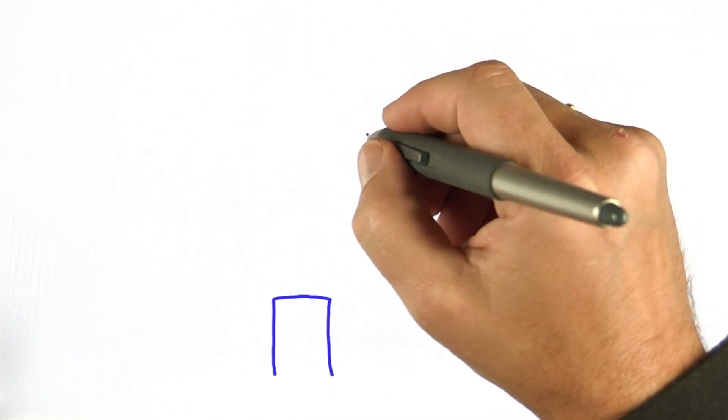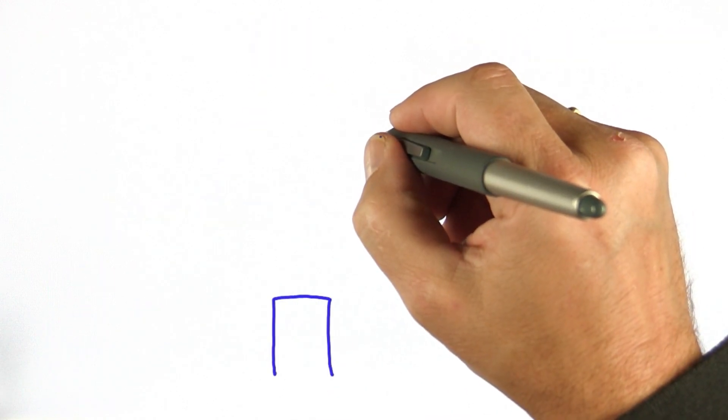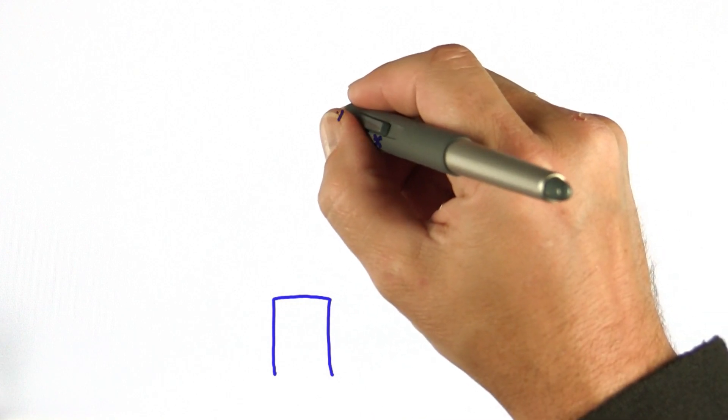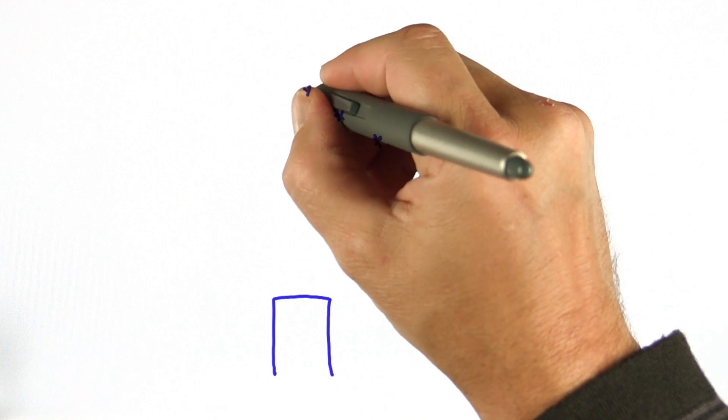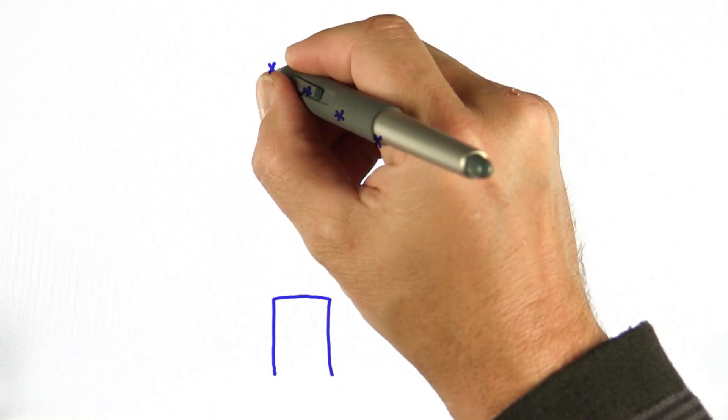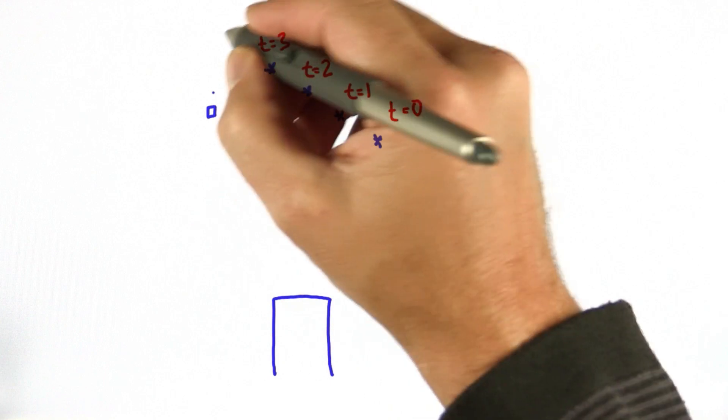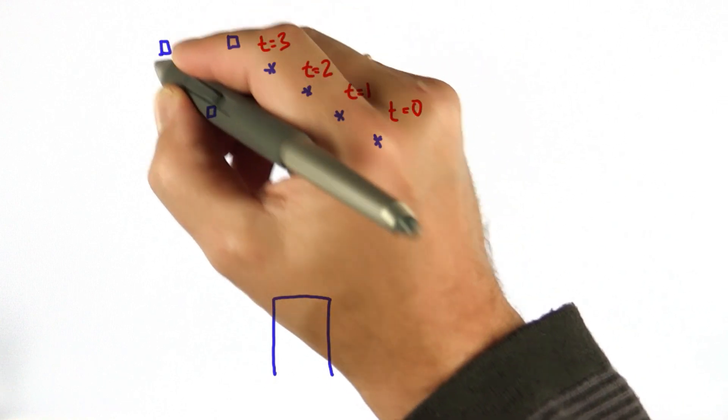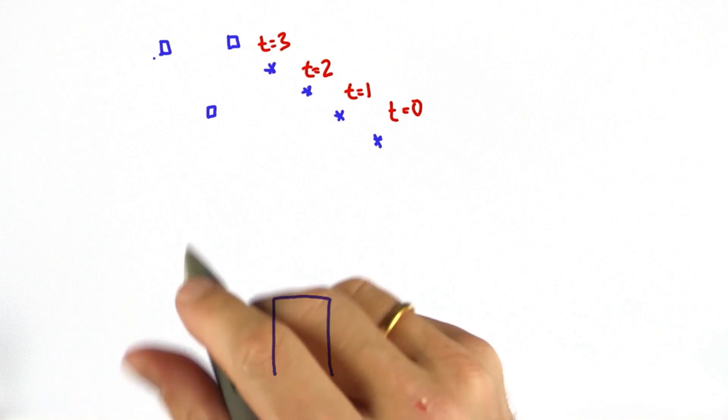Let me start with an example. Consider the car down here. Let's assume it sees this measurement: an object here, here, here, and here. At time t equals 0, t equals 1, 2, and 3. Where would you assume the object would be at t equals 4? Check one of those three boxes.